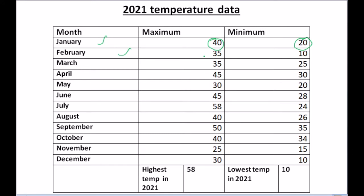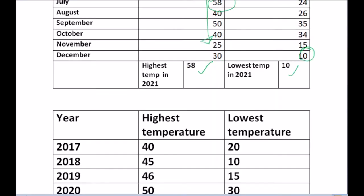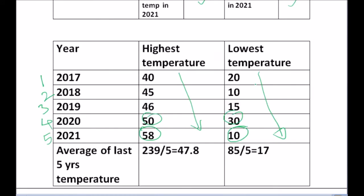So for the year 2021, we got the highest temperature and the lowest temperature. We will make the same data for the last five years — the 1st year through the 5th year. For the 5th year we got 58 highest and 10 lowest; for the 4th year, 50 highest and 30 lowest, and so on. Now we have maximum and minimum temperatures for the last five years, and we take the average of these five data points — for example, 40 + 45 + 46 + 50 + 58 divided by 5.